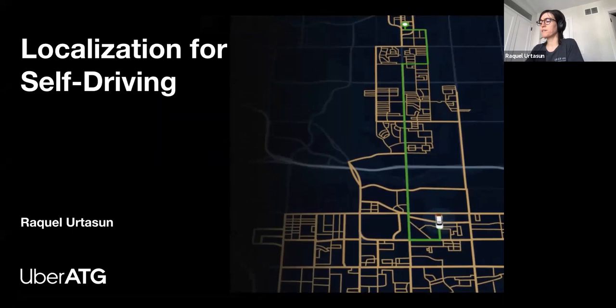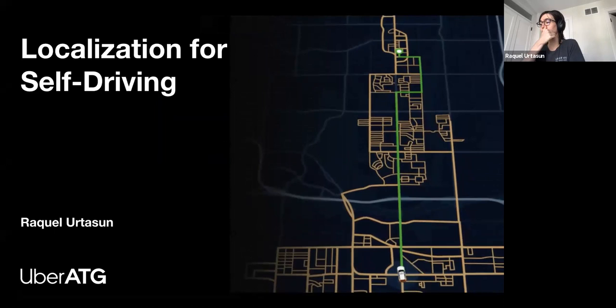Hi everyone, my name is Raquel Ortazia and I'm the Chief Scientist at Uber ATG as well as a professor at the University of Toronto. Today I will be talking about localization for self-driving vehicles.